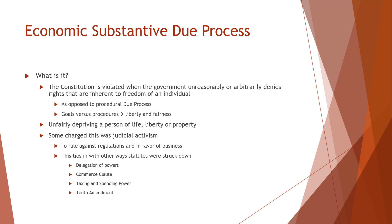One of the problems with substantive due process is that these are potentially rights that are not explicitly written in the Constitution. From the Warren Court on, conservatives were often charging more liberal courts with judicial activism. Now what we're seeing with this conservative supermajority on the court is that whenever one side has a lot of votes, they will use those votes to push certain agendas.